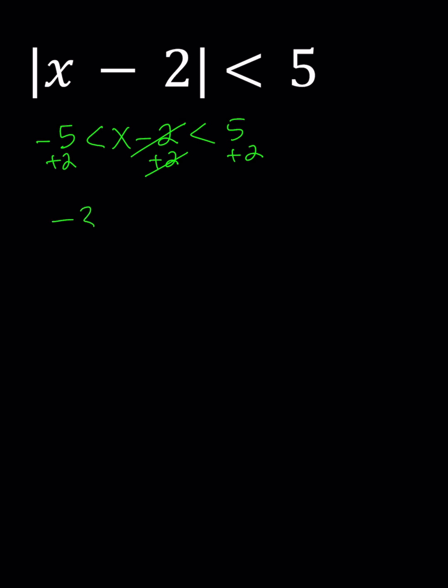Negative 5 plus 2 is negative 3, and then we have x, and then 5 plus 2 is 7.